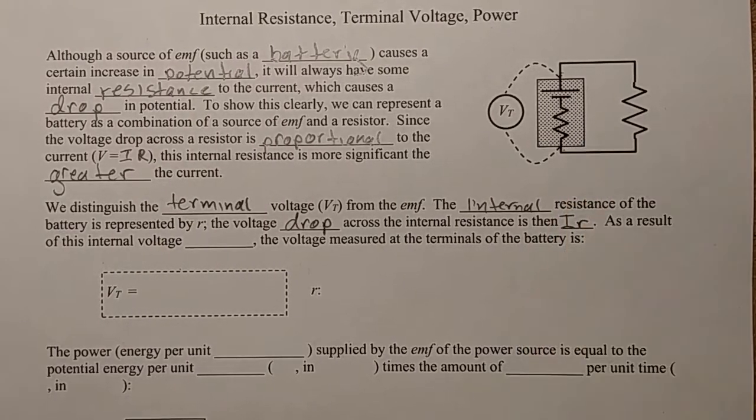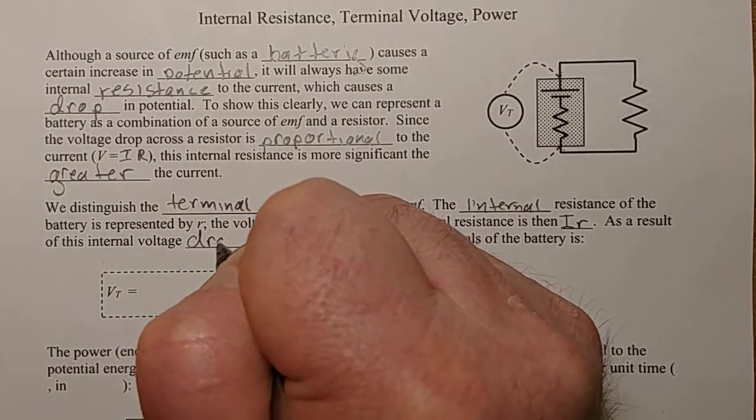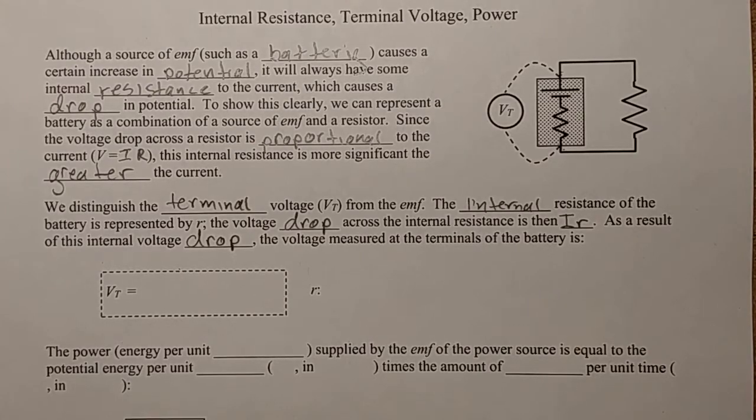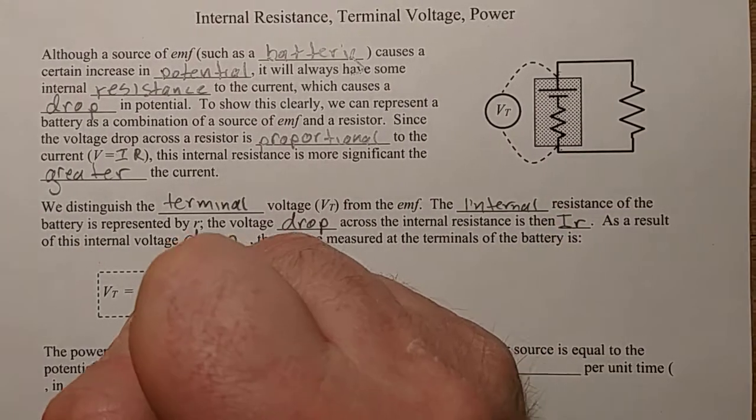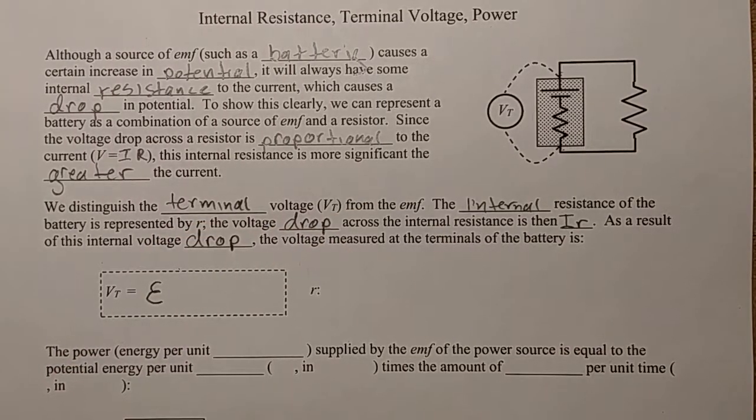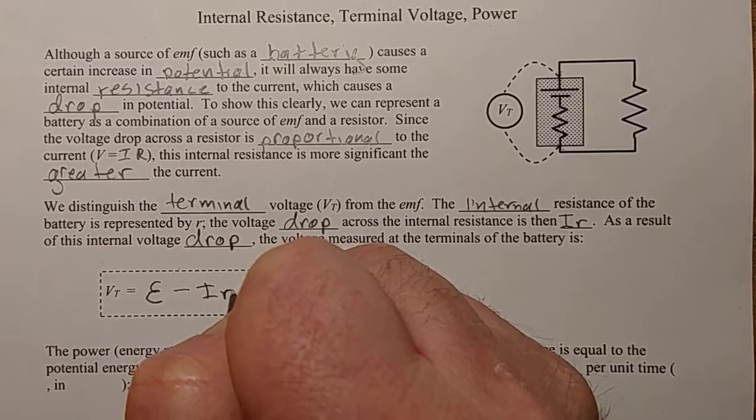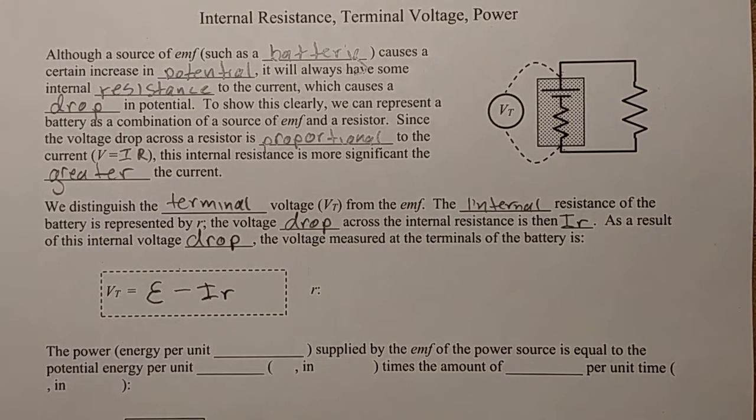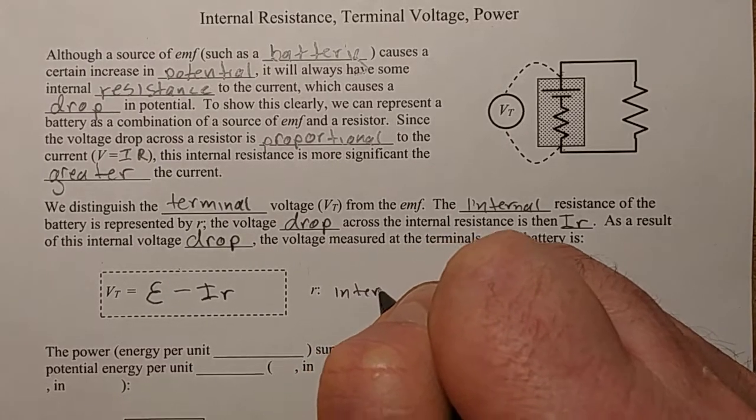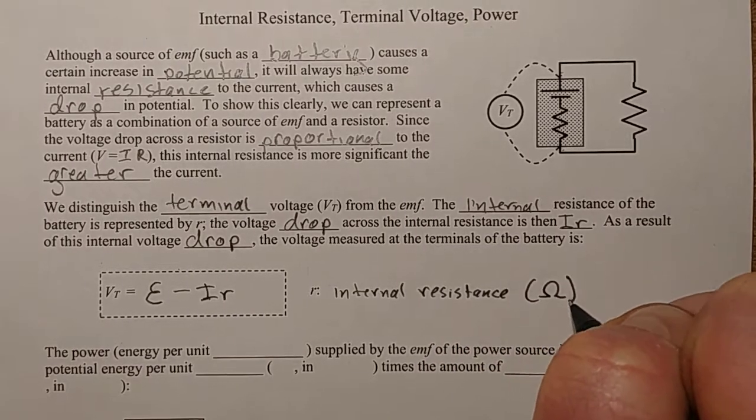Then we have a voltage drop across the internal resistance is simply Ir. Voltage drops are IR, so this voltage drop is no different. But this internal voltage drop decreases the voltage that you see at the terminal of the battery. So if there were no current going through here, then at the terminals of the battery, you would just measure the EMF created by the chemical reaction in the battery. But when current flows through, that is decreased by the voltage drop across the internal resistance. So it is decreased by Ir, and r is the internal resistance, which of course is measured in ohms.